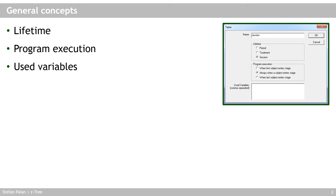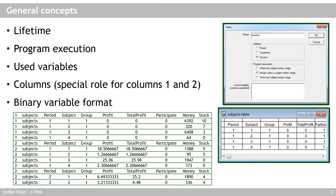Looking at an output .xls file, we can see what some tables look like. In this excerpt, the second column tells you which table the information is from, and the first column tells you which treatment it's from. If you run the first treatment after opening Z3, all entries in the XLS file will have a '1' in front; once you start a second treatment, all entries will have a '2'.